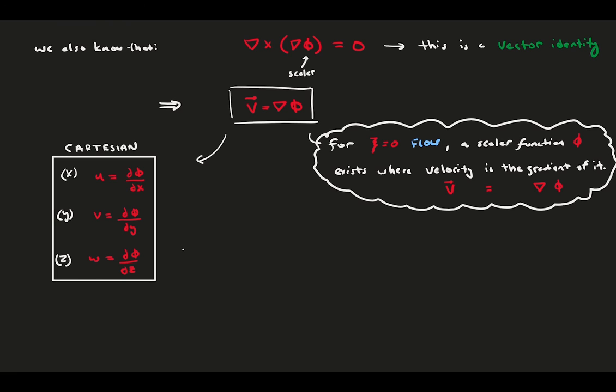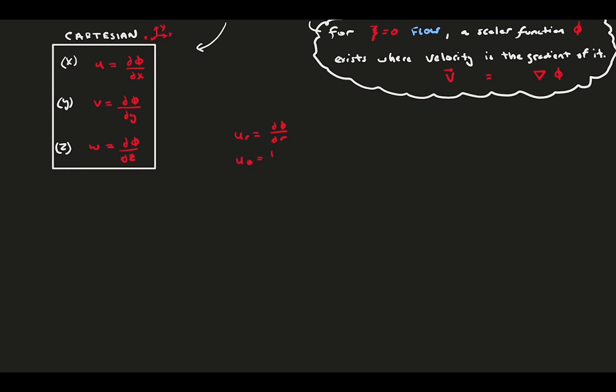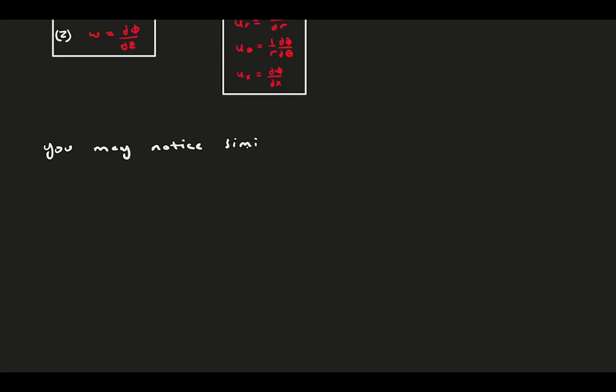This is useful for theoretical analysis because we can take three equations, one for each velocity, and combine them into a single equation based on this velocity potential. For completeness, let's also write them out for cylindrical coordinates. Now, you may notice some similarities between the velocity potential, a scalar, and the stream function, also a scalar. First, we note that the velocity potential can work for three-dimensional flows, where the stream function requires two-dimensional flow, or at least axisymmetric flow.